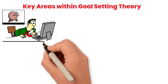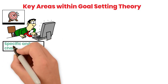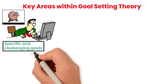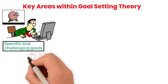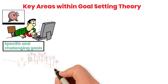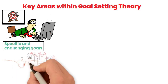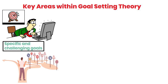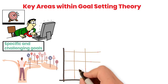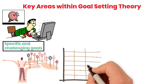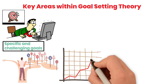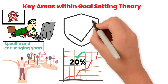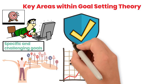The first is the concept of specific and challenging goals. According to the theory, goals that are clear and difficult lead to higher performance compared to vague or easy goals. For example, a specific goal like 'increase sales by 20% in the next quarter' is more effective than a general goal like 'do your best.'